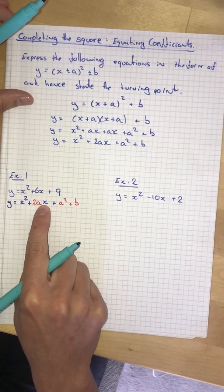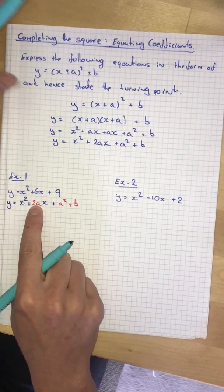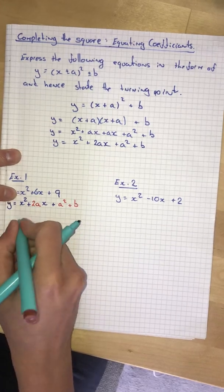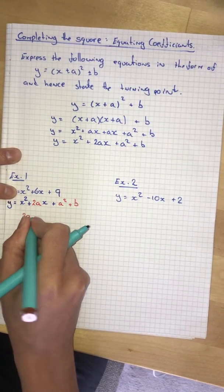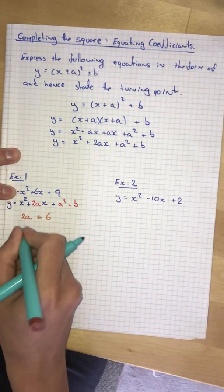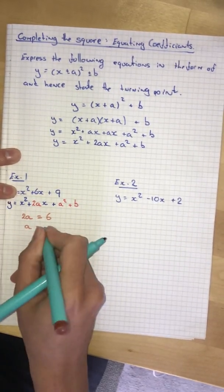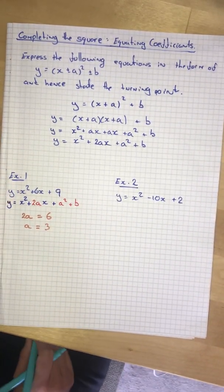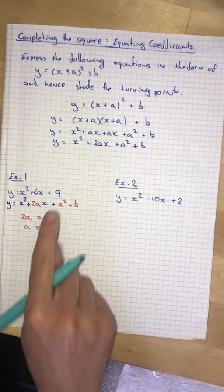But if you look here, what is the coefficient of the x term? It is 2a. So what I can write down by equating the coefficients is 2a must equal 6. So a must equal 3. Which will then help us solve for the other one.